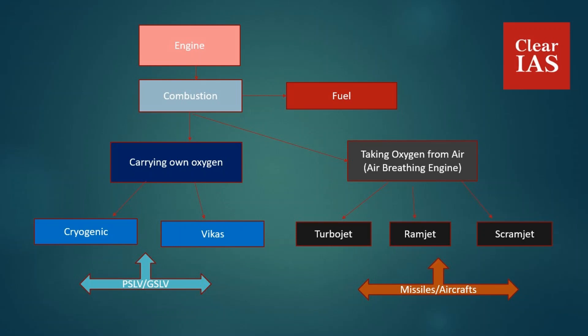Another issue is that above 100 to 115 kilometers above the atmosphere, oxygen is not there. Since oxygen is required for combustion, you cannot use air-breathing engines above that altitude. But when sending a satellite into space, the satellite launch vehicle has to go all the way to space, and air-breathing engines cannot work there.